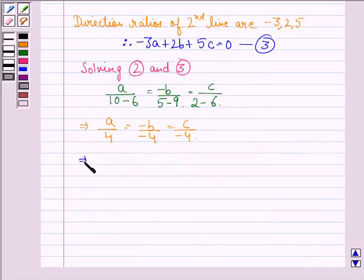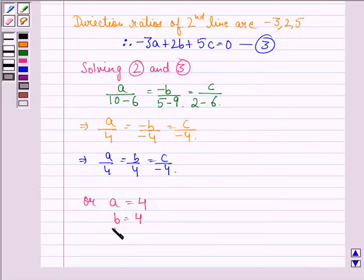Or, this also implies that A by 4 is equal to B by 4 is equal to C upon minus 4. So we can say that A is equal to 4, B is equal to 4 and C is equal to minus 4.